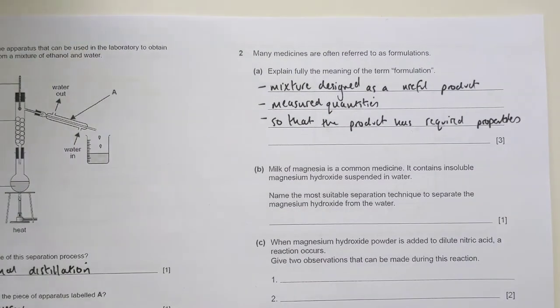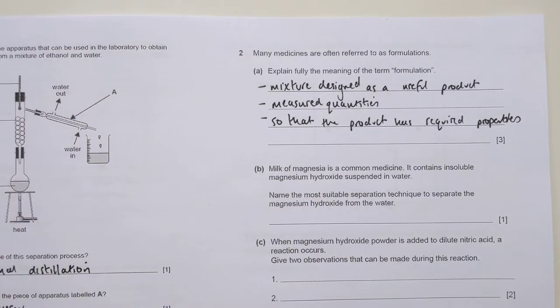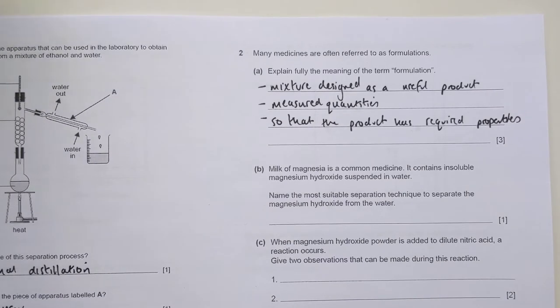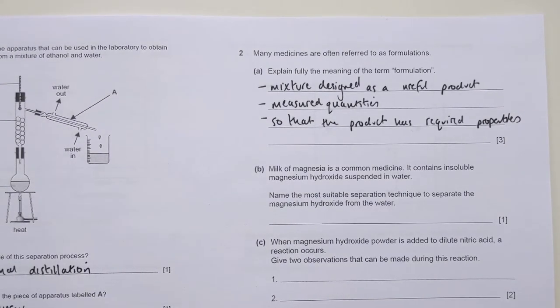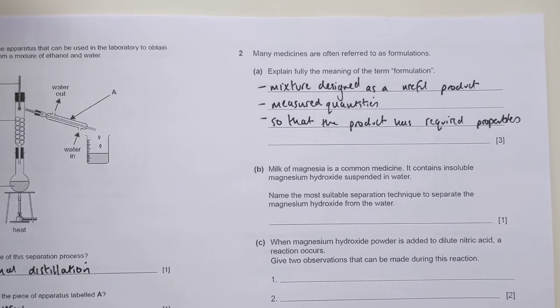And the final point is that so that the finished product has certain or required properties. So if you read that as a whole, it's a mixture designed as a useful product. We achieve that useful product by measuring out quantities of different substances, and that's to enable us to give the final product specific properties for that purpose. So there's a lot of detail in the definition.